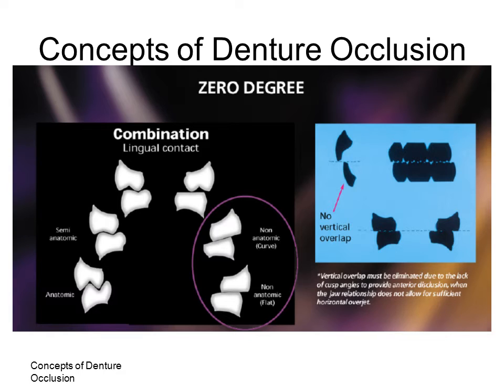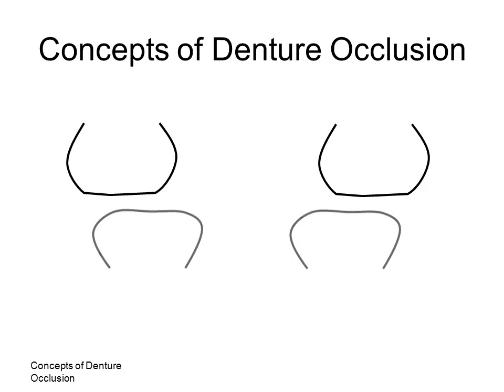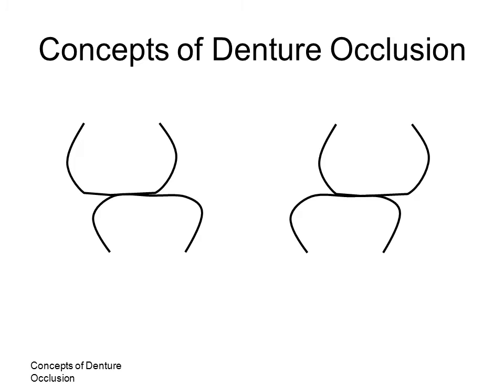The non-anatomic scheme employs a flat, monoplane tooth. There is bilateral simultaneous contact of teeth in the centric relation position. Balance may or may not be obtained, depending on the use of compensating curves. In a monoplane non-anatomic articulation with no compensating curve, there is bilateral simultaneous contact in the centric relation position with no attempt to provide balance. Eccentric interferences are evaluated and adjusted in the mouth.